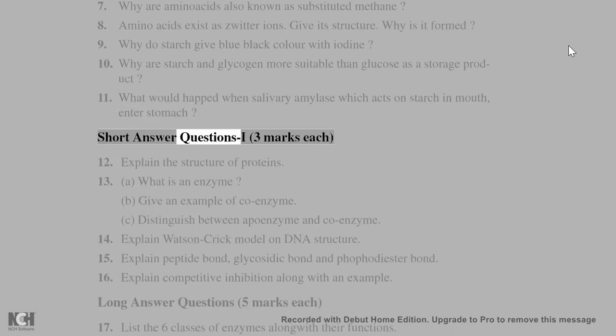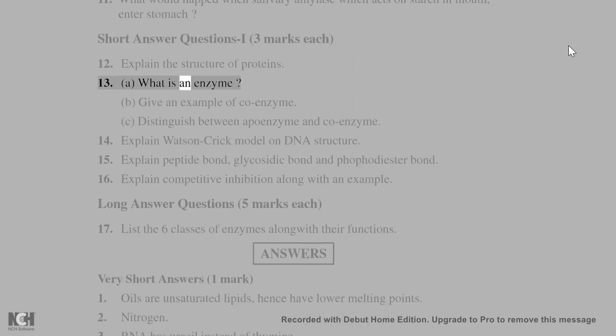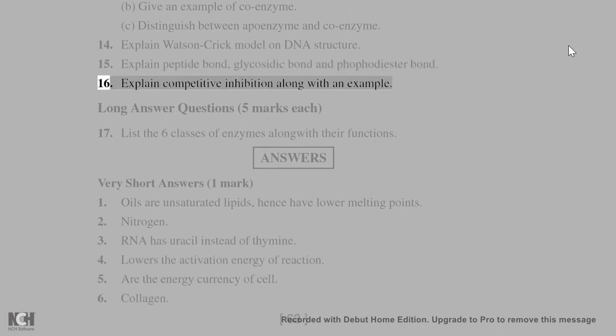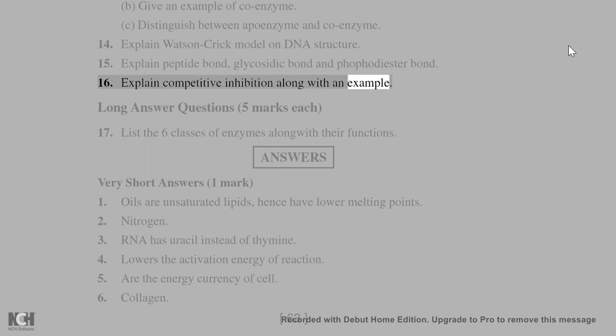Short answer questions I, three marks each. 12. Explain the structure of proteins. 13. A. What is an enzyme? B. Give an example of coenzyme. C. Distinguish between apoenzyme and coenzyme. 14. Explain Watson and Crick model on DNA structure. 15. Explain peptide bond, glycosidic bond, and phosphodiester bond. 16. Explain competitive inhibition along with an example. Long answer questions, five marks each. 17. List the six classes of enzymes along with their functions.